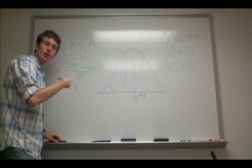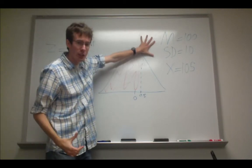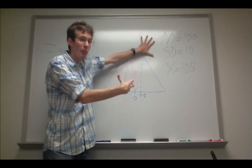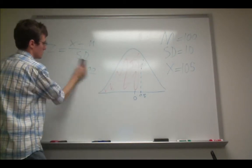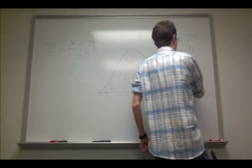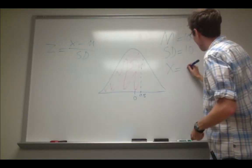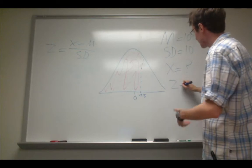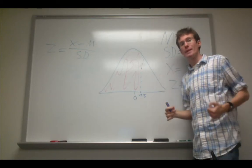Lastly, we can rearrange this to calculate a raw score if we know the mean and standard deviation of the population it was drawn from and we know the z-score. In other words, x is unknown, and we have to solve for it. So x equals question mark, and let's say we had somebody that we knew had a z-score of 1.5.